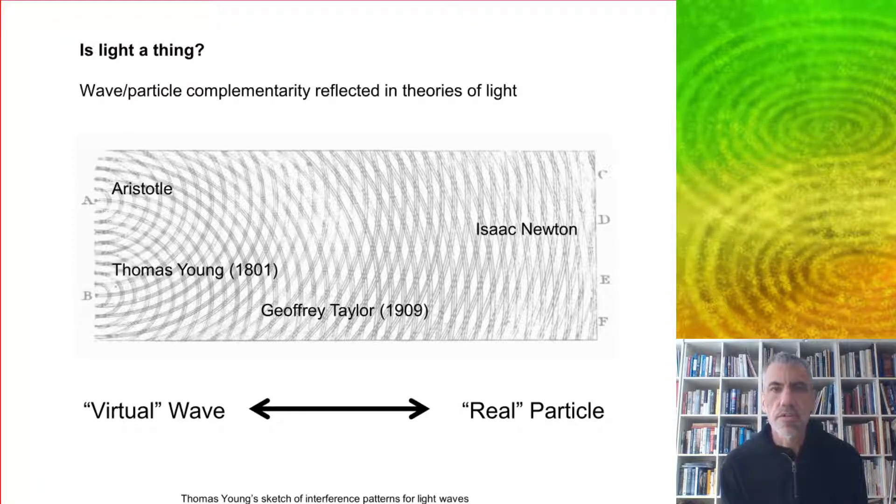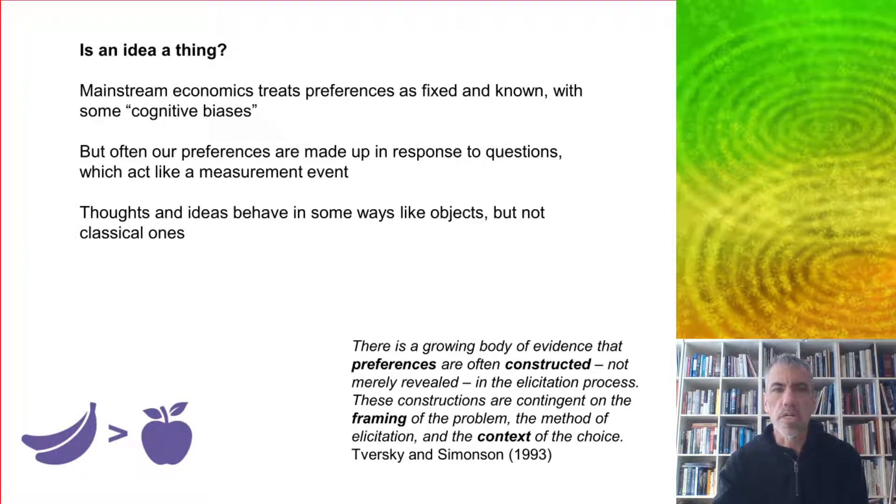And the duality of money, therefore, is similar to the duality of light. So wave particle complementarity has been reflected in theories of light. Go back millennia. So Aristotle thought light was a wave and Newton thought it was particles and sort of bounced back and forth until finally the quantum theory came along and showed that it has properties of both at the same time. It's the same with money.